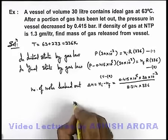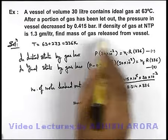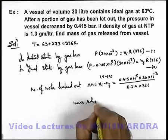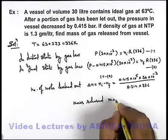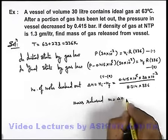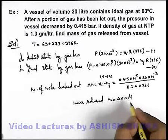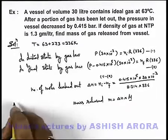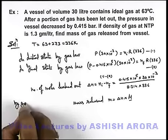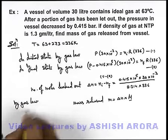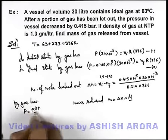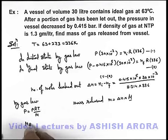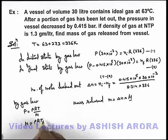If we wish to calculate the mass which is released, mass released can be simply calculated as number of moles which are leaked out multiplied by the molar mass. And molar mass we can calculate by using gas law again. By gas law we can state P is equal to rho RT by M. So molar mass M can be written as rho RT by P.